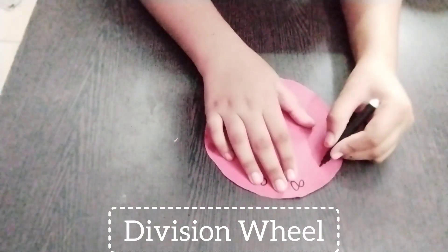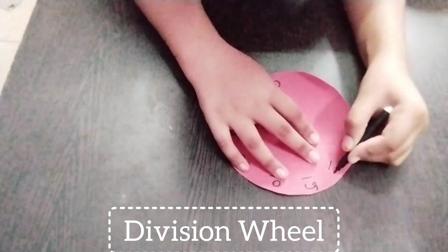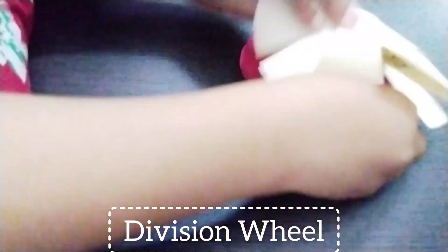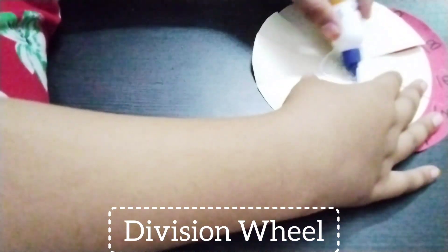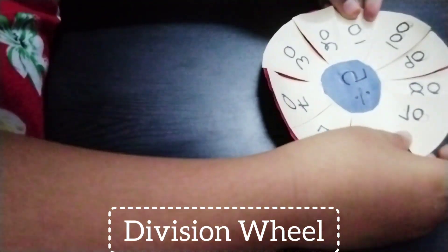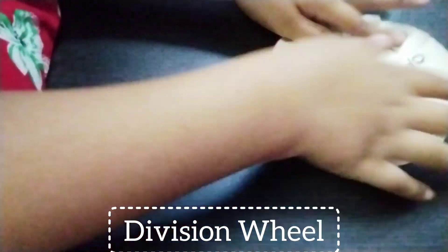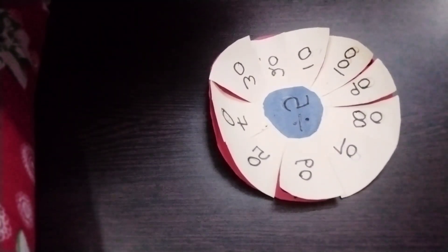Do the same on the pink circle and write 2, 4, 6, 8, 10, 12, 14, 16, 18, 20. Finally, paste the white circle on top of the pink circle. Please like, share, and subscribe.